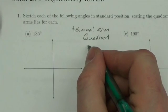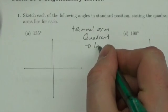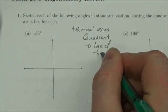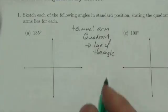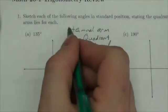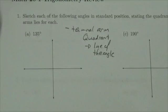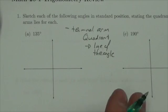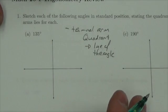And then what I need is the line of the angle, and I'll explain that in just a second. But these are the two things I need: that terminal arm in the right quadrant, and I need that line of the angle.